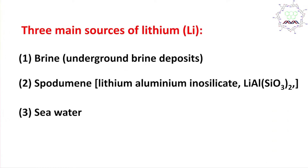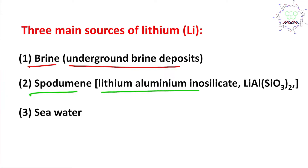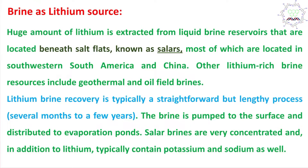What are the sources of lithium? The main three sources are brine — more specifically, underground brine deposits. Another is spodumene, which is actually a lithium aluminum silicate derivative and is an ore of lithium. The third is seawater. What is brine? Brine is actually a solution of salts extracted from reservoirs located beneath salt flats which are known as salars.